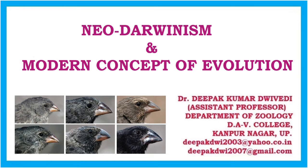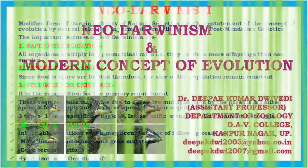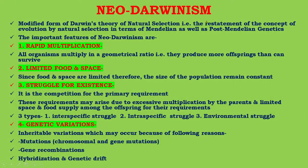Today I am going to talk about a new topic of evolution: Neo-Darwinism and the modern concept of evolution. Neo-Darwinism is a modified form of Darwin's theory of natural selection — a restatement of the concept of evolution by natural selection in terms of Mendelian as well as post-Mendelian genetics.